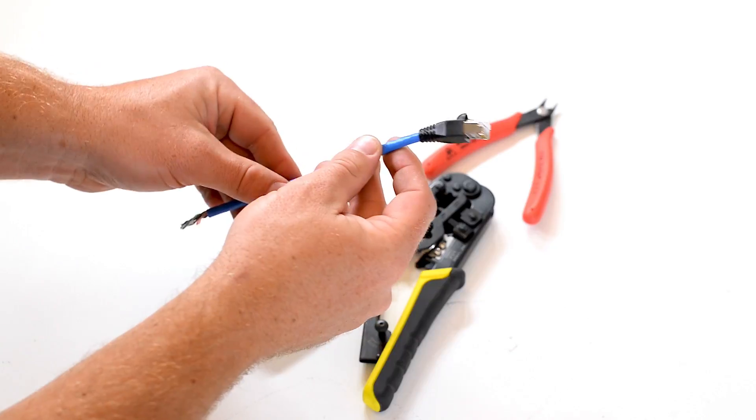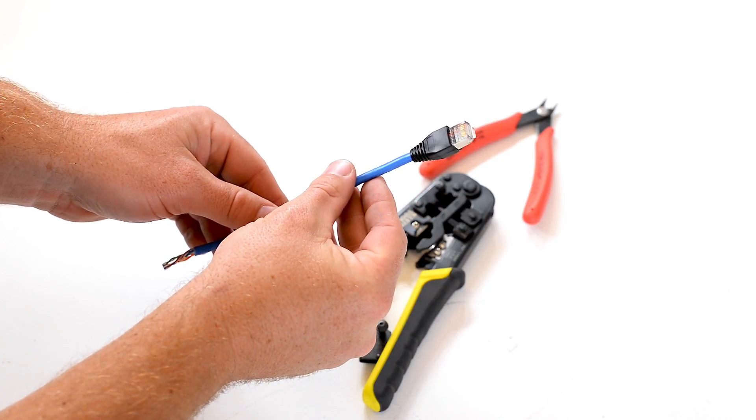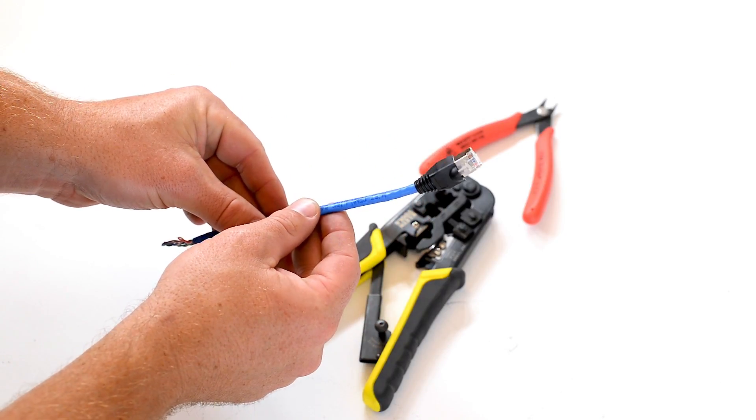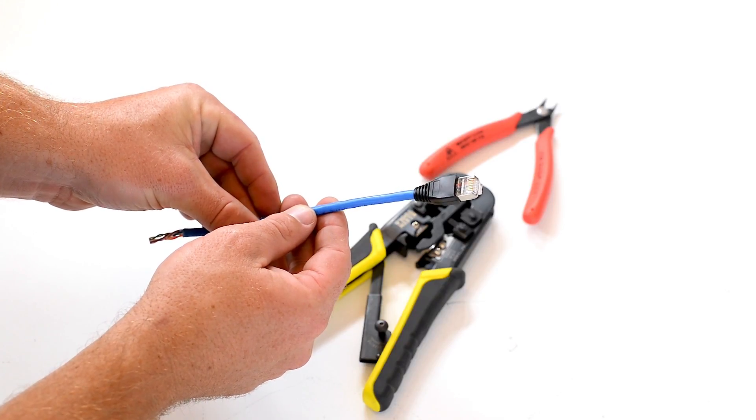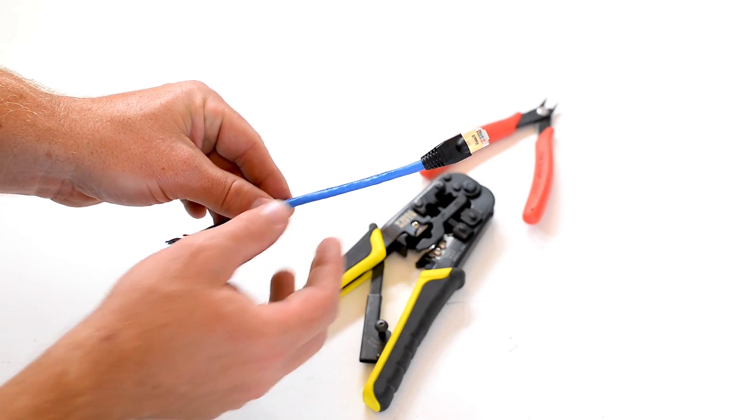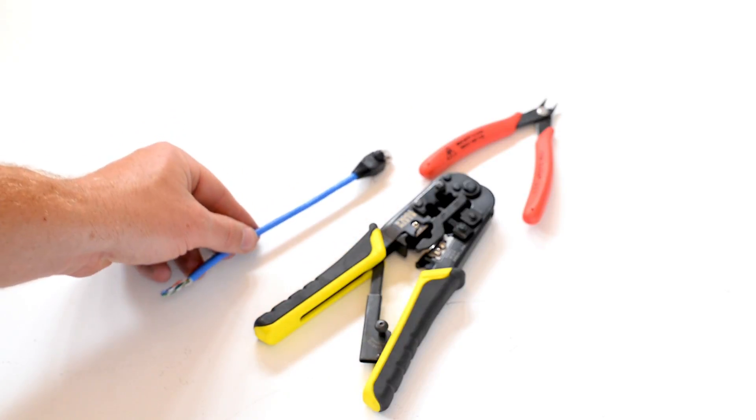This just helps protect that RJ45 connection. At that point you have made a successful network RJ45 crimp that is 8 pins and at this point you would move on to testing of the connection.